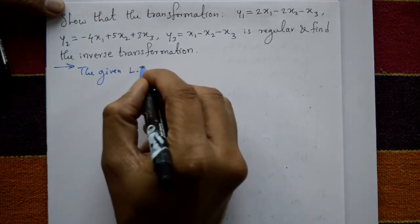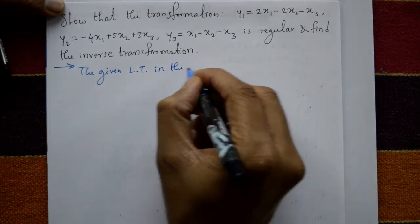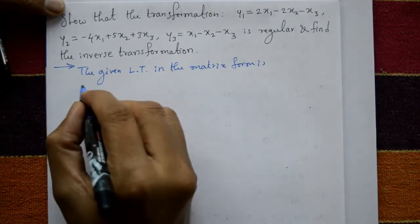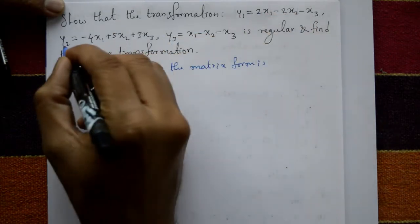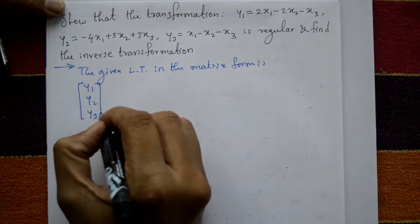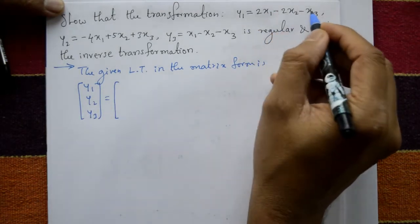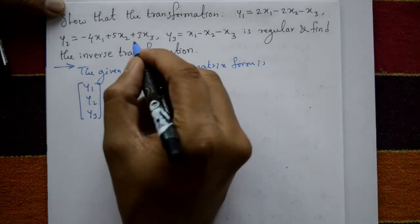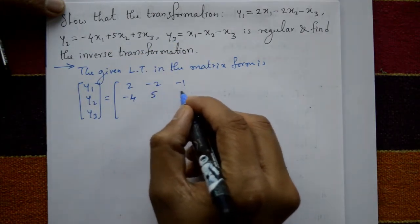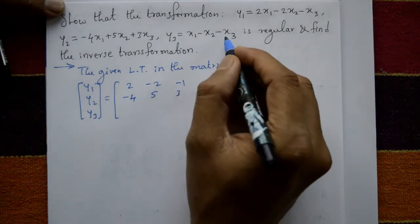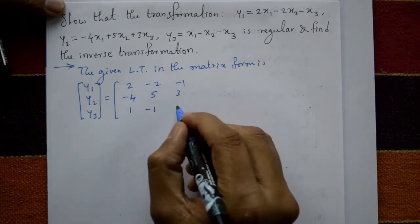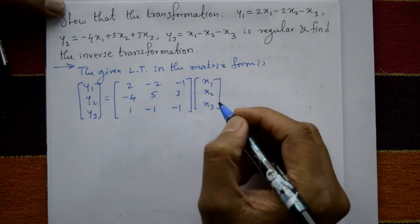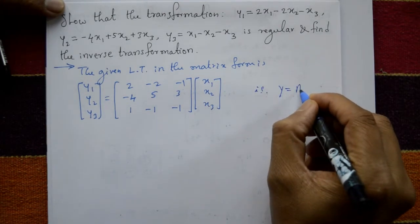The given linear transformation in matrix form is: [y1, y2, y3] on the left side equals the coefficient matrix. The coefficients of x1, x2, x3 in equation one are [2, -2, -1]; in equation two are [-4, 5, 3]; in equation three are [1, -1, -1], multiplied by column matrix [x1, x2, x3]. So Y = A·X.